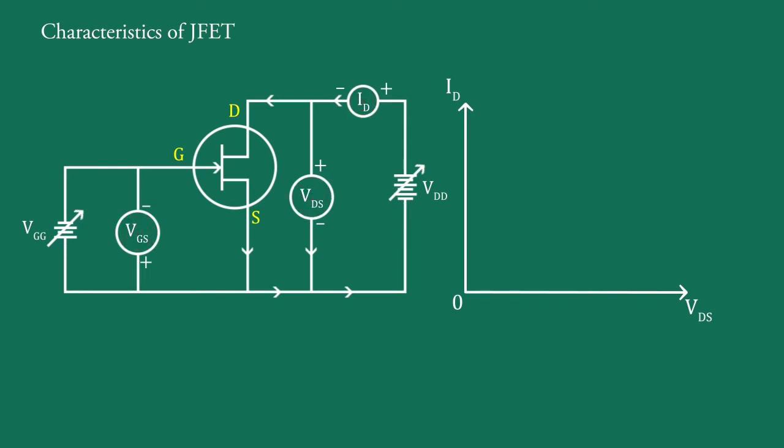Let's assume first that VGS equals 0V, i.e., gate is shorted to the source. Therefore, the PN junction is not reverse biased. Now as VDS is increased, drain current will also increase in a nearly linear manner until point B where a saturation effect is noted and a knee develops in the characteristics curve like this.